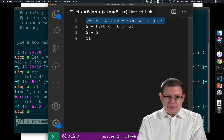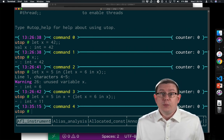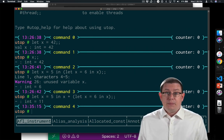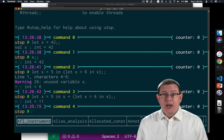Let's just double check that inside of utop. Indeed, we get 11. And we don't get an unused variable warning this time. Because we did actually use the binding of x to 5 in evaluating that entire expression.